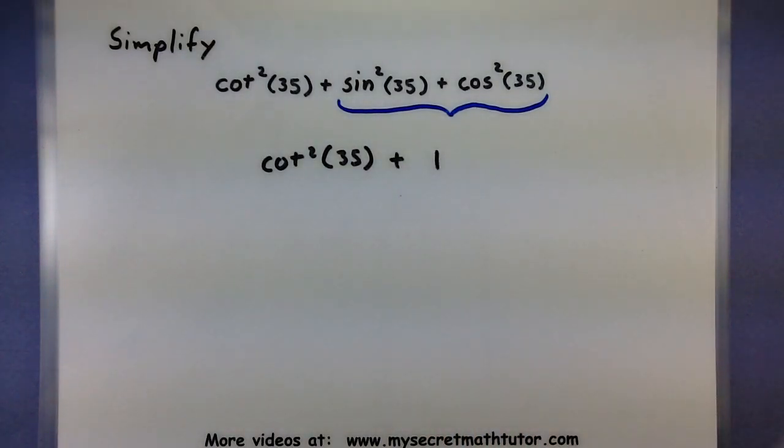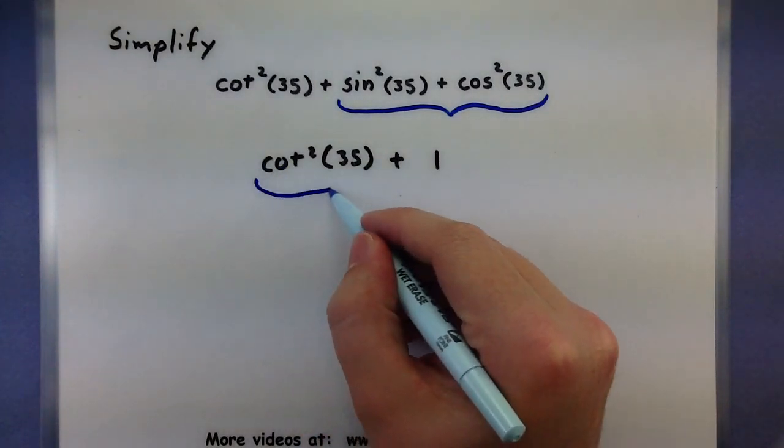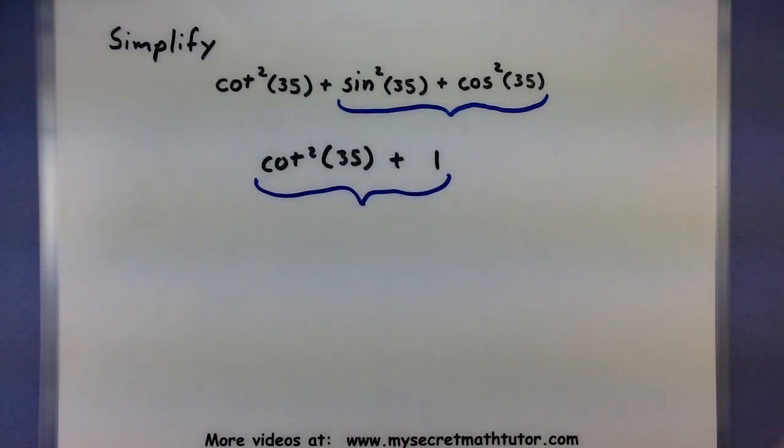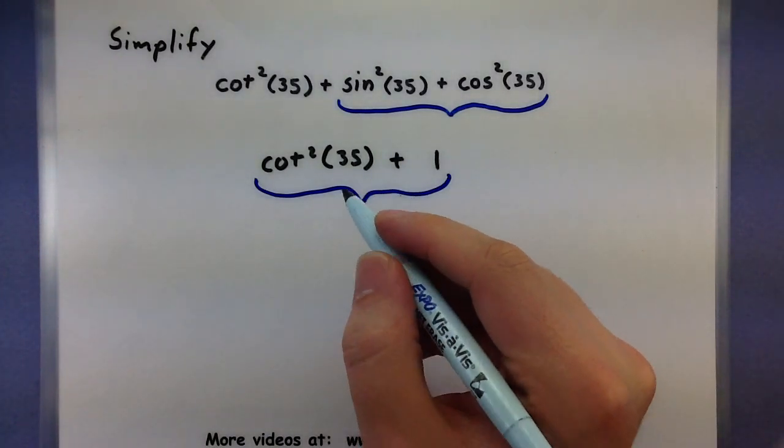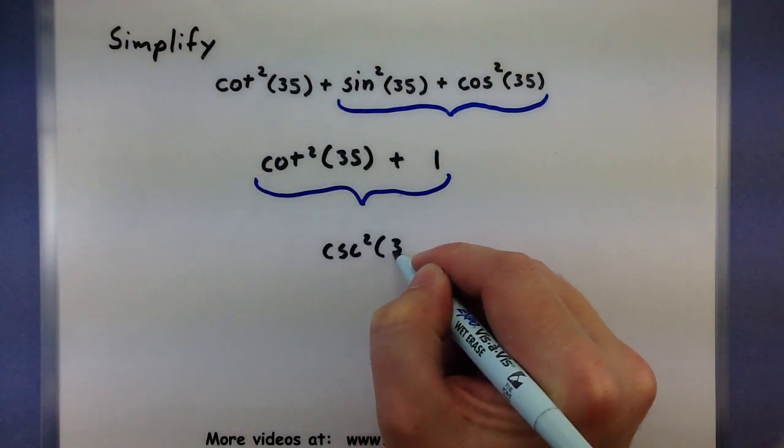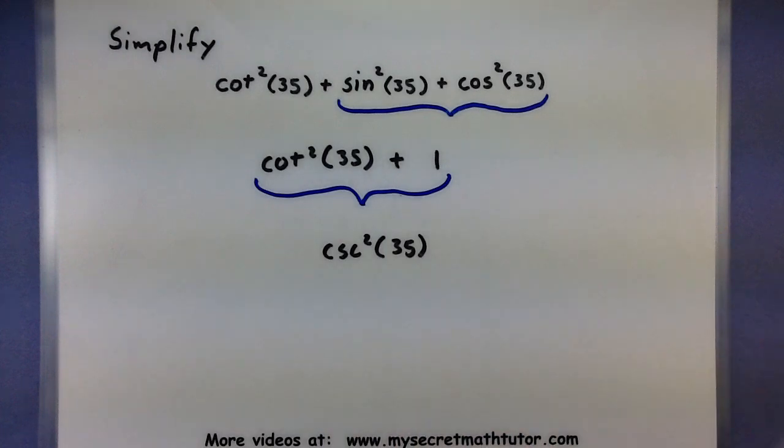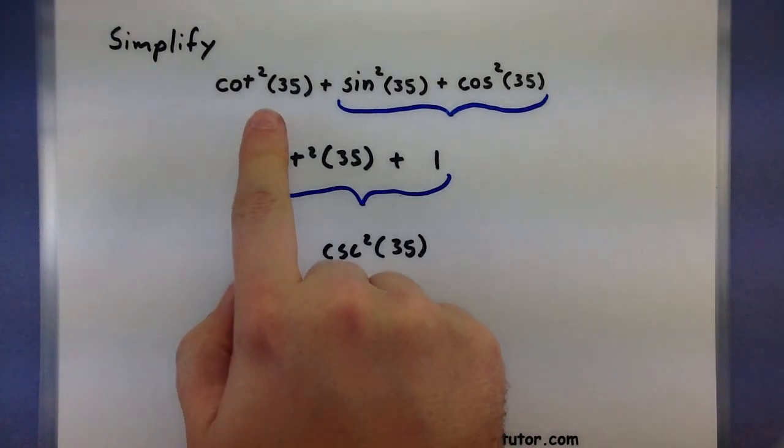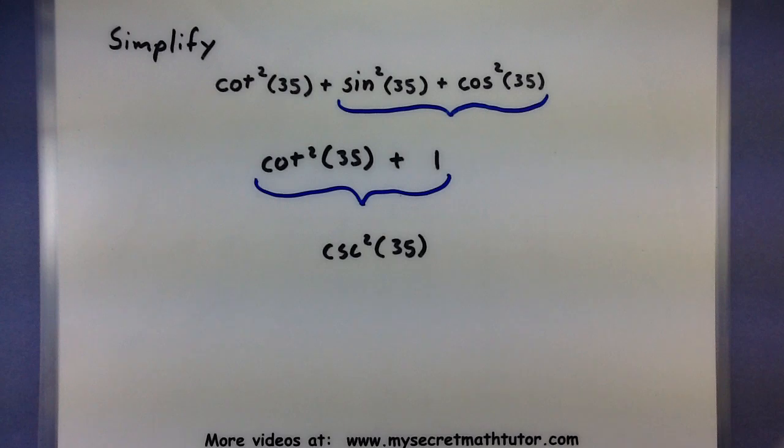Now this is a lot simpler than what I had before. But actually I can take this and even simplify it even further. If I have cot²(35) + 1, I can say that this is equal to my csc²(35). And now I have just a single trigonometric expression being squared instead of 1, 2, 3 of them. So a lot simpler.